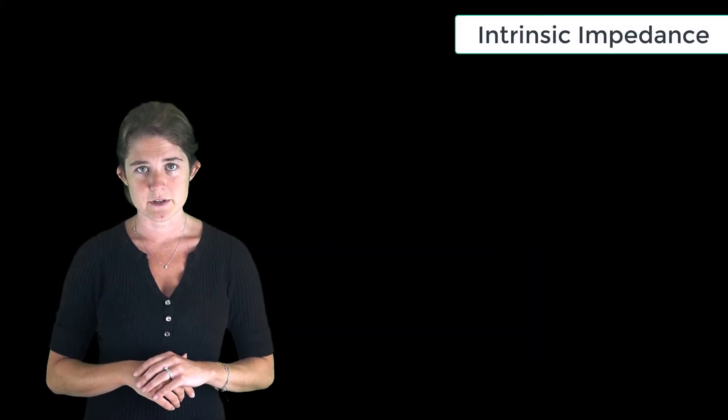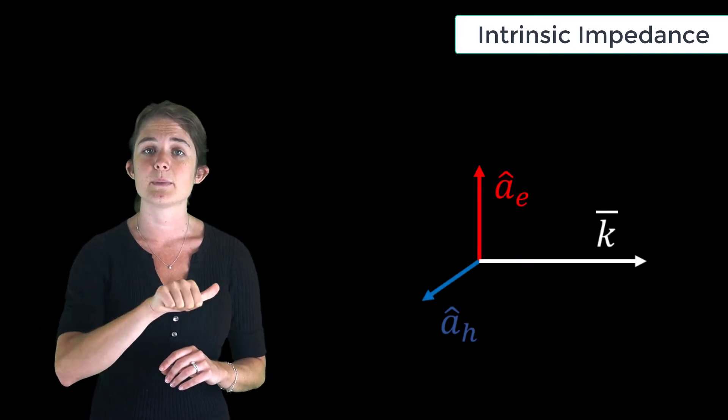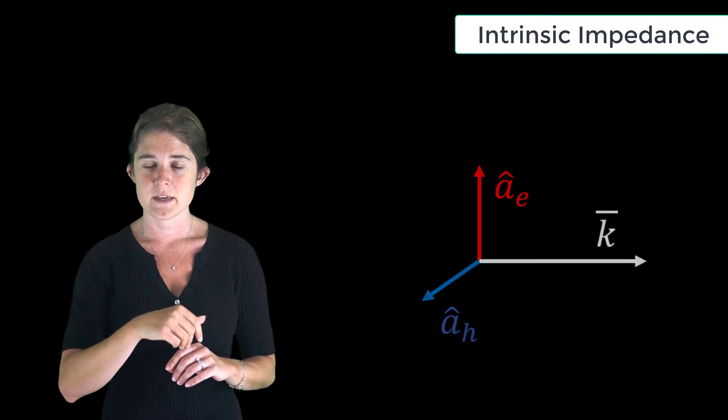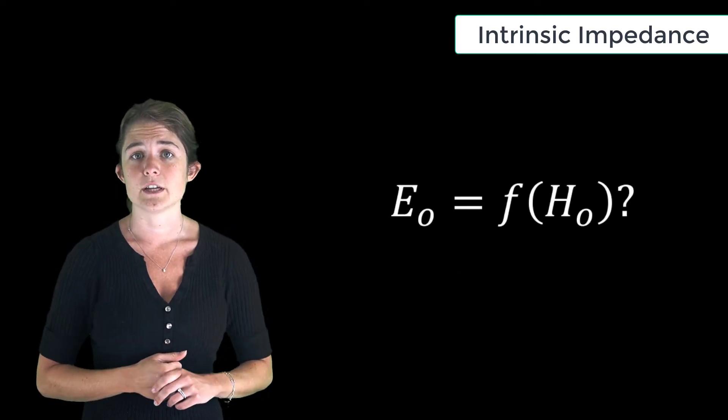Our definition of a plane wave constrains the relative orientations of the electric and magnetic fields with respect to the direction of propagation. The next question we want to ask is: can we also find a relationship between the magnitudes of the E and H fields?